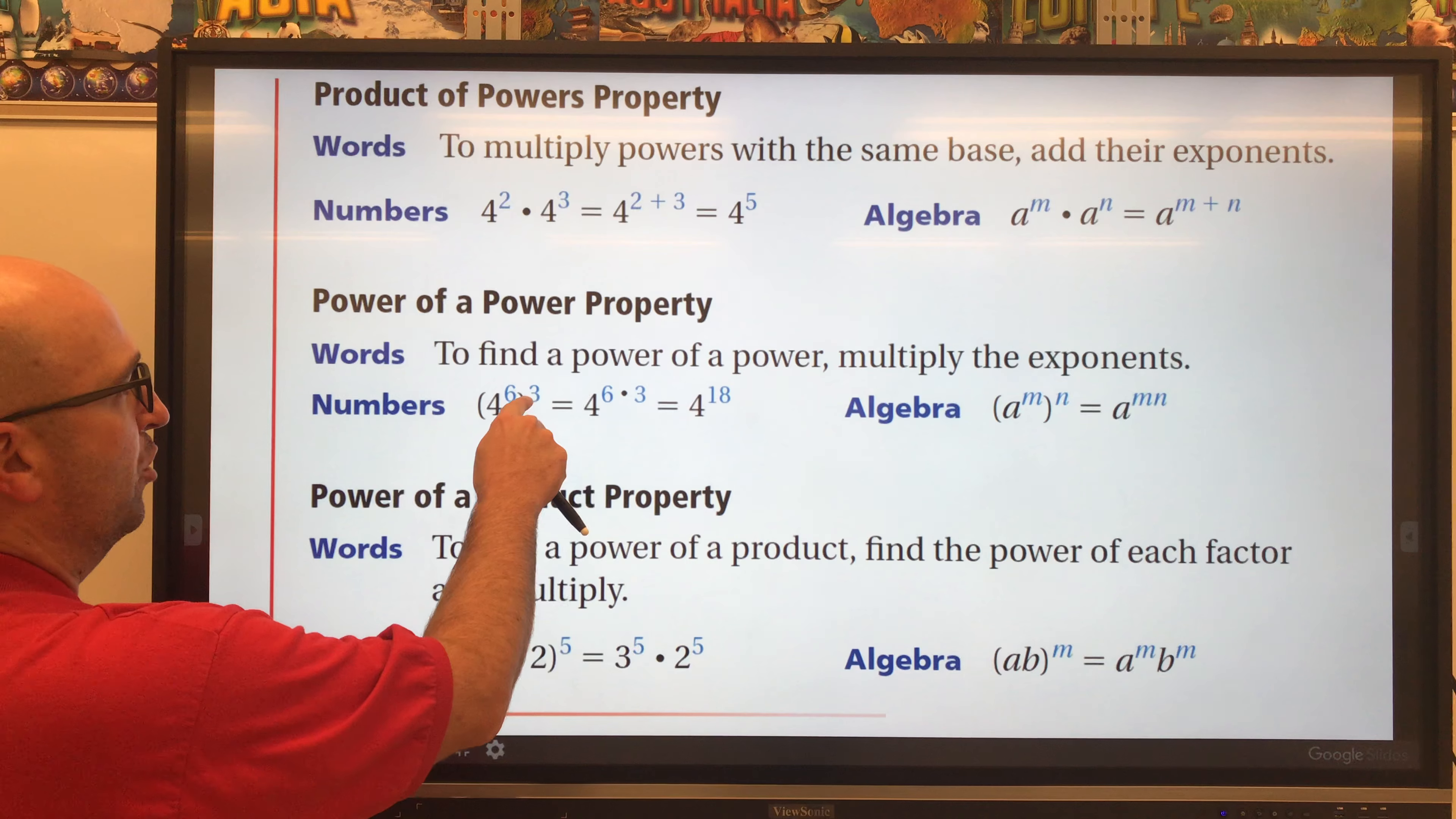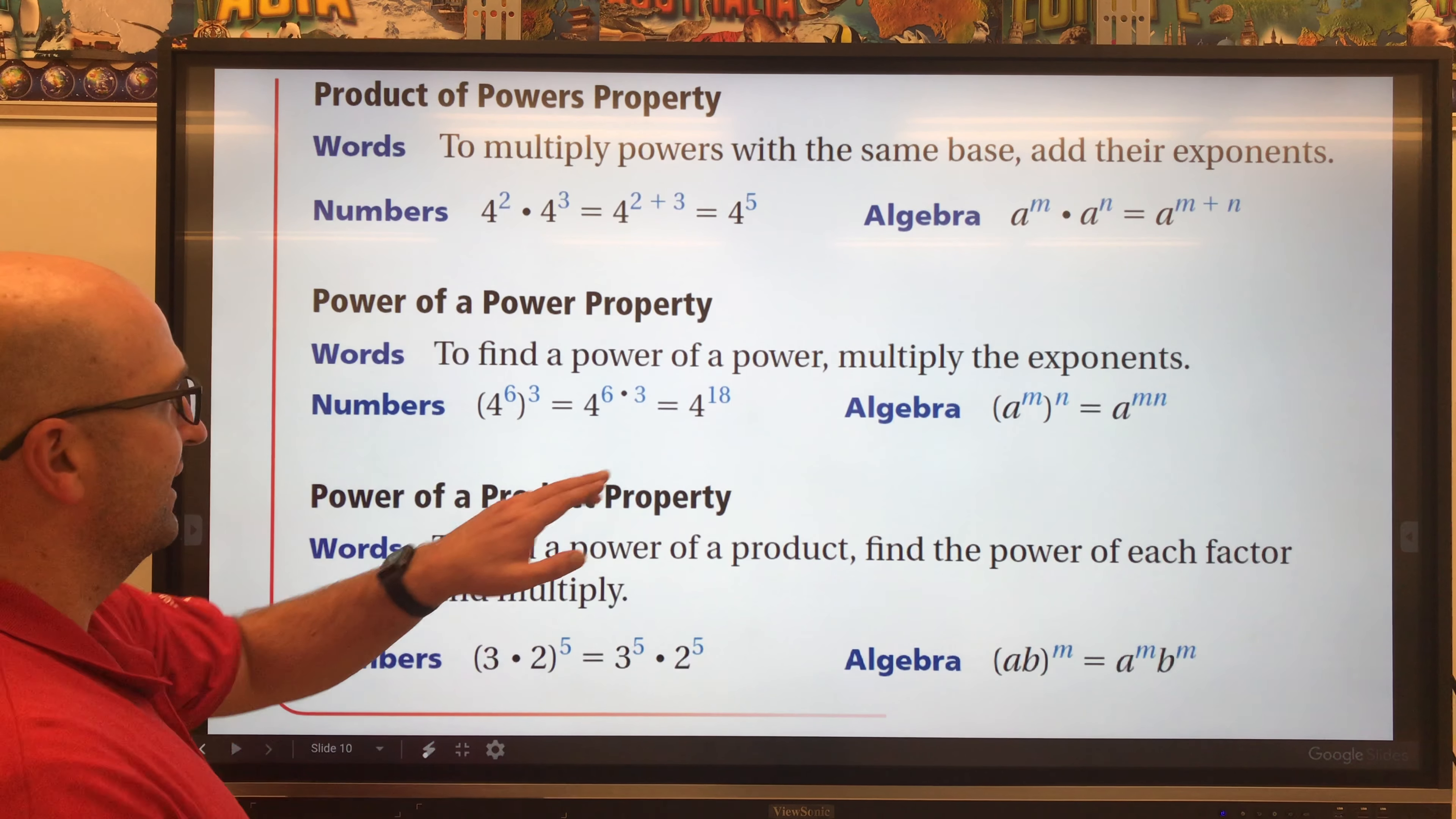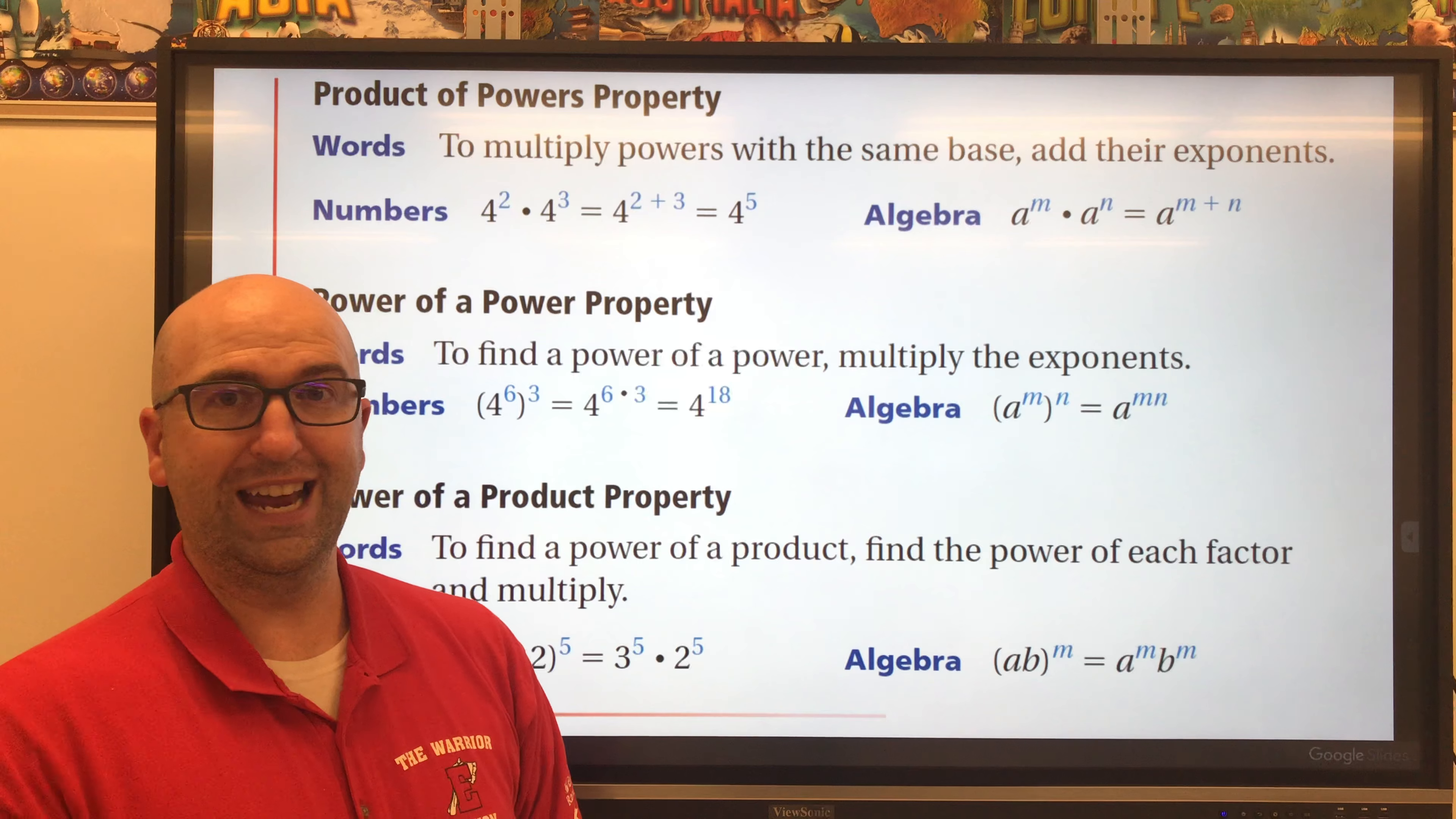Those numbers you're going to multiply together, and that will give you your exponent. So four to the sixth to the third is the same as four to the eighteenth power.